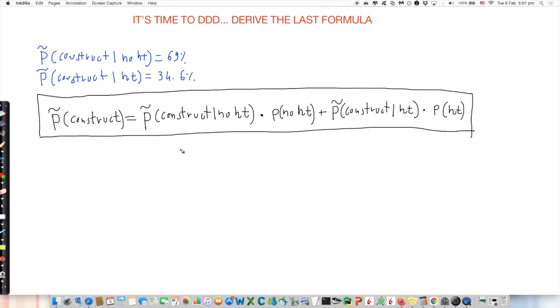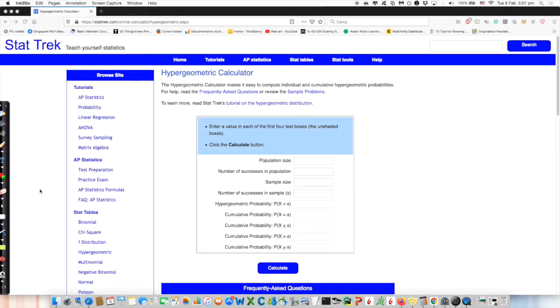Guess what? To get this we can use the hypergeometric calculator again. You can see on top this is 69 percent, this is 34.6 percent. How can we compute this and the other? Let's go to the hypergeometric calculator and see.